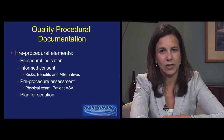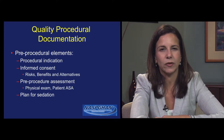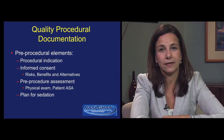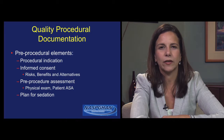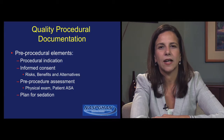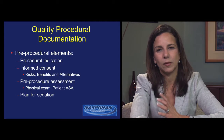Pre-procedural elements that can be used to assess the quality of documentation of pediatric gastrointestinal endoscopy include clear mention of the procedural indication, discussion of informed consent, including discussion of risks, benefits, and alternatives to the procedure, evidence that the endoscopist performed a pre-procedure assessment either by documentation of a physical exam or by noting the patient's ASA status, as well as evidence that the endoscopist established a plan for how sedation would be achieved, even if that routinely involves an anesthesiologist-administered regimen.